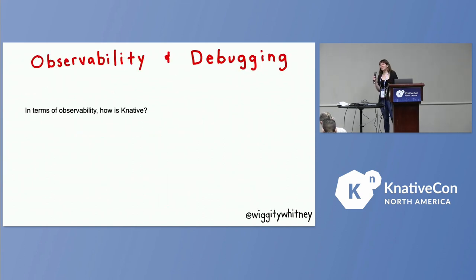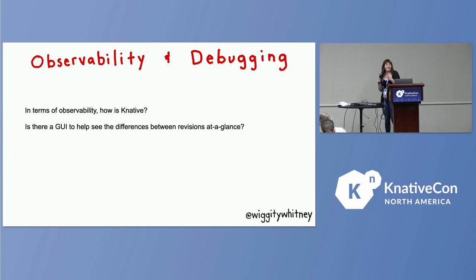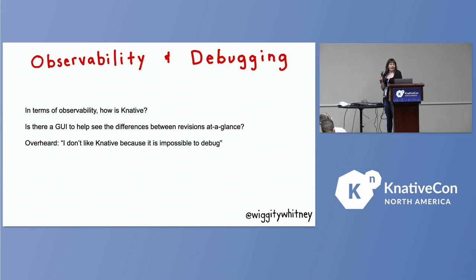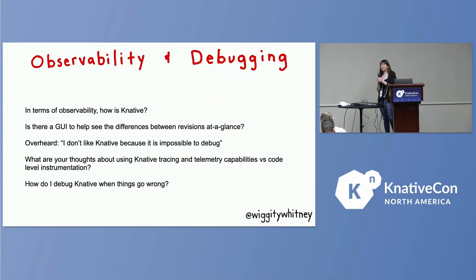In terms of observability, I'm going to list the questions — I'm not going to tell you how I answer them. I'm very comfortable saying I don't know, and I'll send people to the Knative Slack workspace. So: Is there a GUI to help see the differences between revisions at a glance? I overheard someone say they don't like Knative because it's impossible to debug — so that's a preconception that's out there. What are your thoughts on using Knative tracing and telemetry capabilities versus code-level instrumentation? And how do I debug Knative when things go wrong?